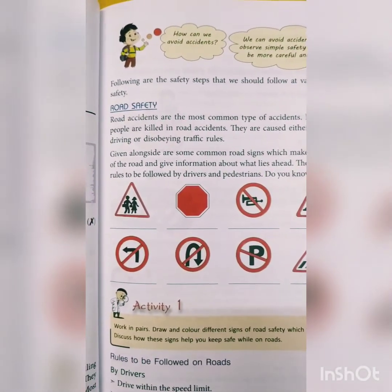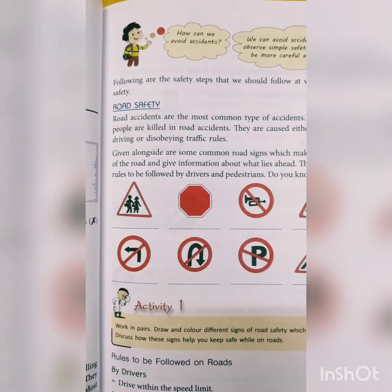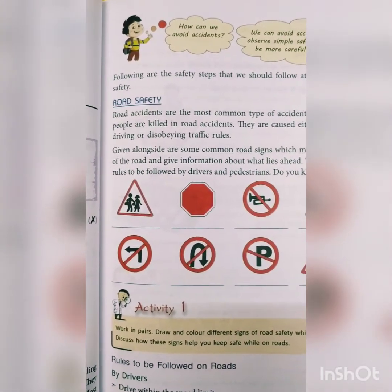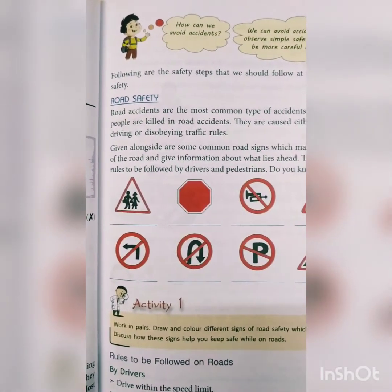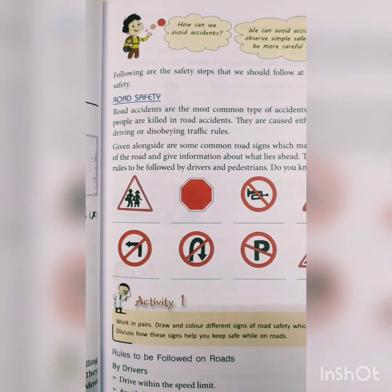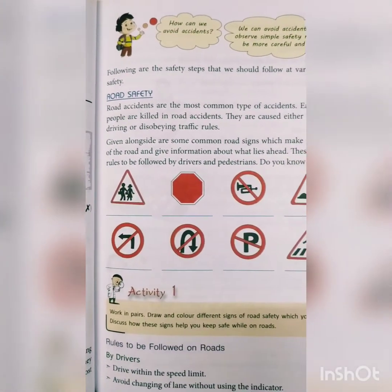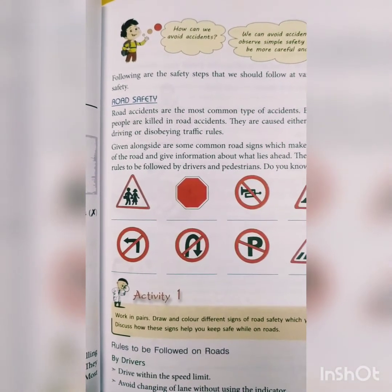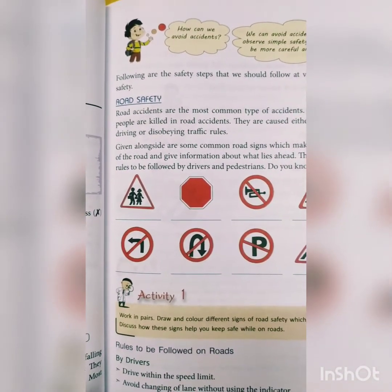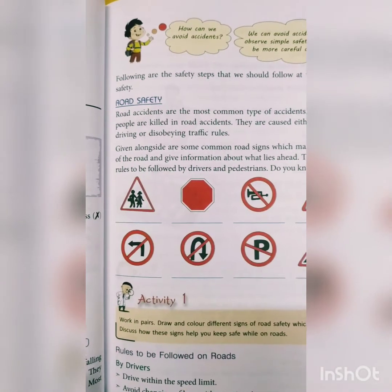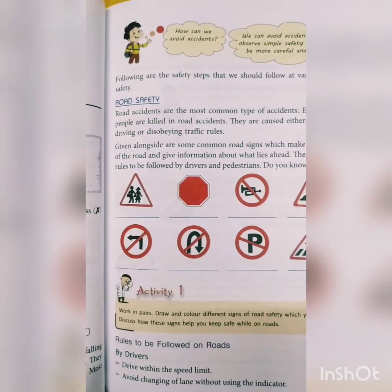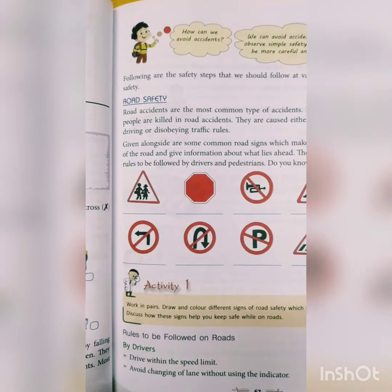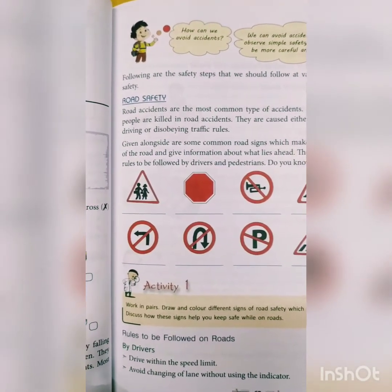To ensure our safety, we need to follow all these safety rules. First of all, we are going to discuss about road safety. As you can see, there are lots of signals on the roads, and you have to be aware of what these signals tell us and what we have to do when we see them.